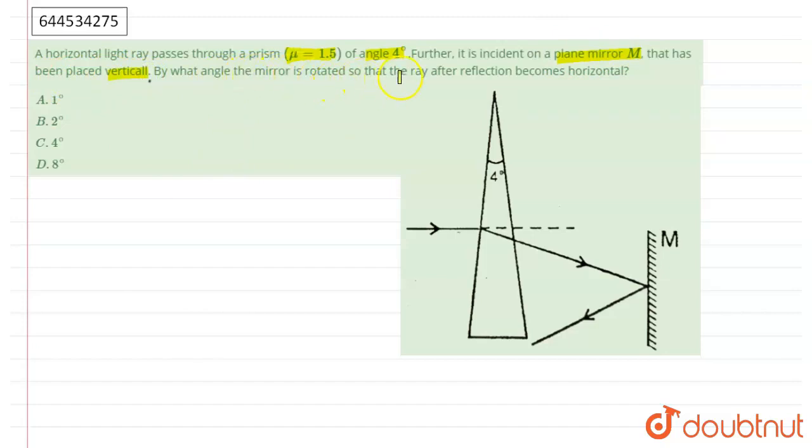In the initial condition, we have to find first of all the deviation angle by the prism. So that deviation angle will be equal to...